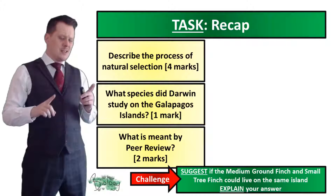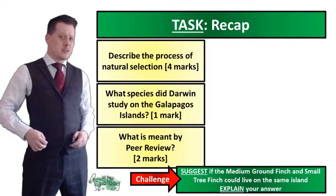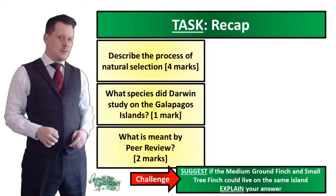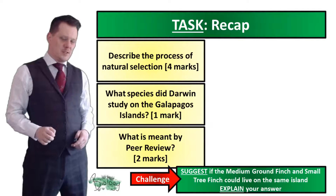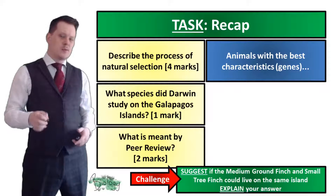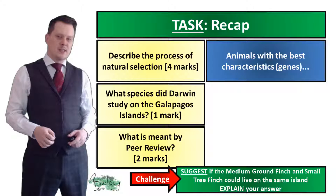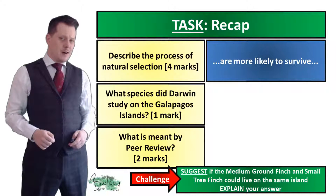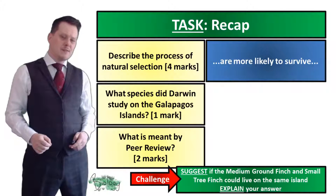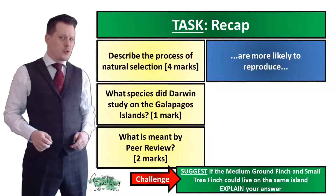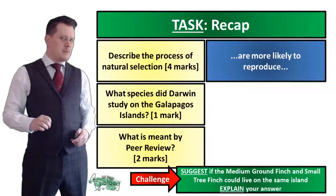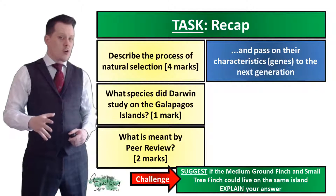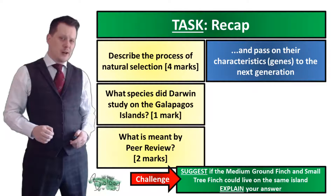Have you got some answers? Let's describe the process of natural selection. There is lots of variation within a species, meaning animals with the best characteristics or genes are more likely to survive. If they are more likely to survive, they are more likely to reproduce. This means those characteristics — those genes — are going to be passed on to the next generation.